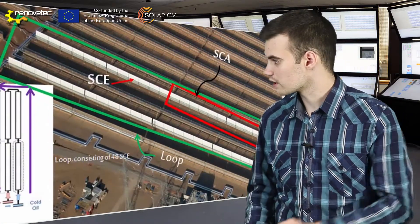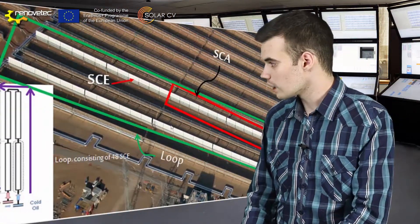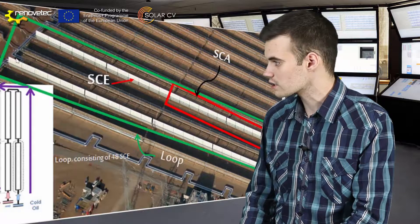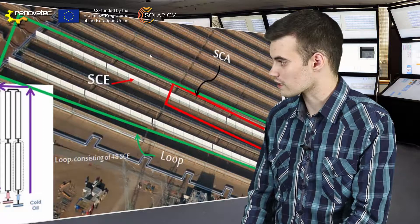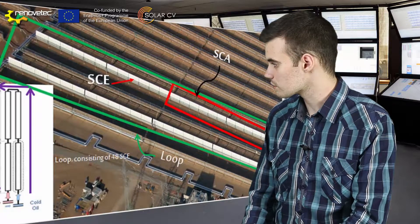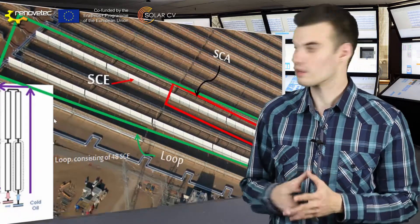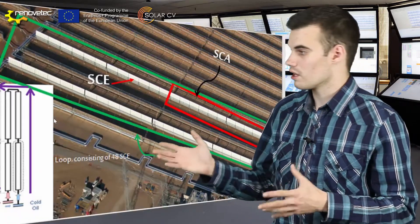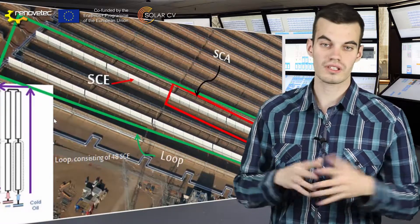Here we can see the SCE, which is really a module, and SCA, which is a collector that is a set of modules, more or less 8 to 12, and a loop which is these two lines of collectors. In this case each loop has one, two, three, and finally four collectors. So more or less each loop is going to have four collectors multiplied by 12 modules, so 48 modules.